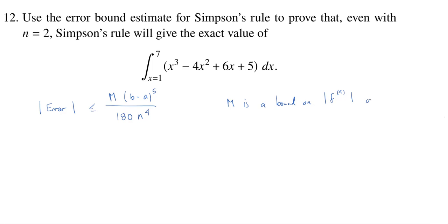So on whatever that interval you're talking about. Well, in our situation, we can even take n to be 2. We know b minus a is going to be 6. So in our case, we have this m, and then we have 6 to the 5th over 180 times 2 to the 4th. And this doesn't look like 0 in terms of error.